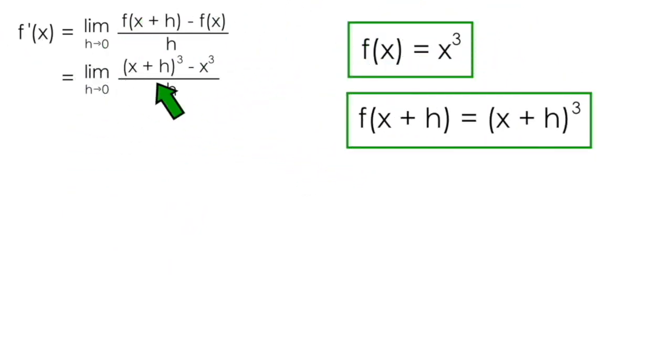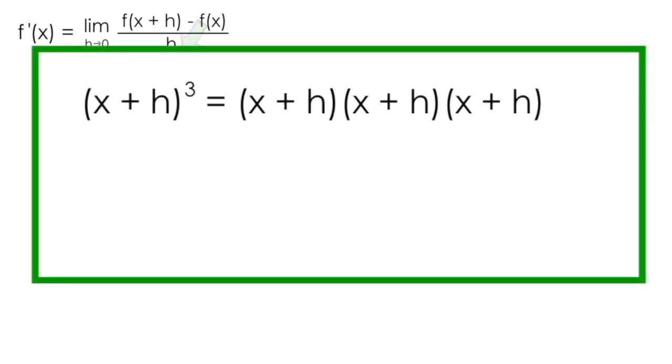Now for some of you, (x + h)³ is kind of a scary or intimidating expression. Maybe you're used to doing FOIL for something like (x + h)², but this cube certainly complicates things. We know that (x + h)³ is really just (x + h)(x + h)(x + h). I could use the FOIL process on two of these (x + h)'s to produce x² + 2xh + h². I'll let you do the FOIL to double check that.